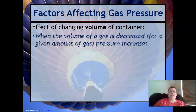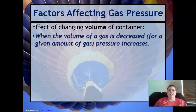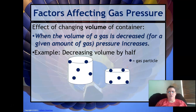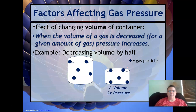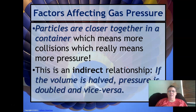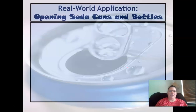Another factor is volume. When the volume of a gas is decreased, the amount of pressure is increased — we saw this with the syringe. Decreasing the volume by half increases the pressure by twice as much. Gases won't have as many places to go, so particles are closer together, meaning more collisions and more pressure. This is an indirect relationship — this is Boyle's Law. If the volume is half, the pressure is doubled, and vice versa.